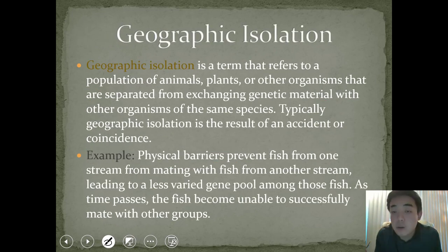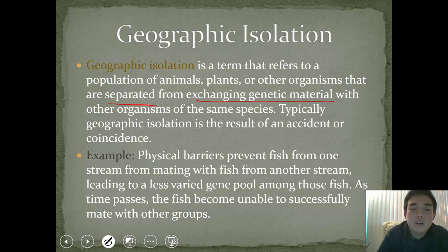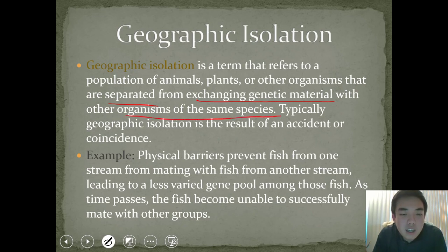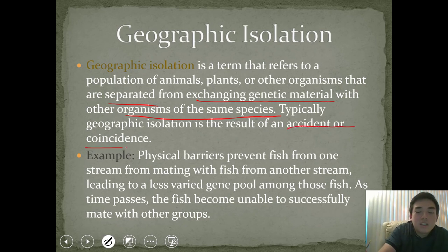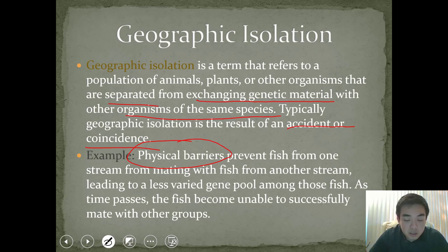Geographic isolation is when a population of animals, plants, or other organisms is separated from exchanging genetic material with other organisms of the same species. Typically, this isolation results from some type of accident or coincidence — sometimes a physical barrier, or even a man-made barrier, that limits the ability of two groups to reproduce with each other. Review the example provided and ask questions in class if you don't understand it.